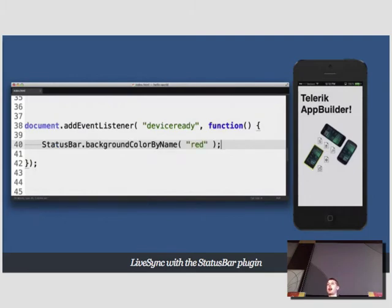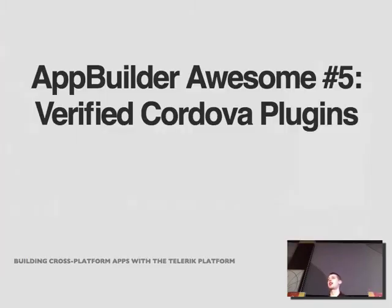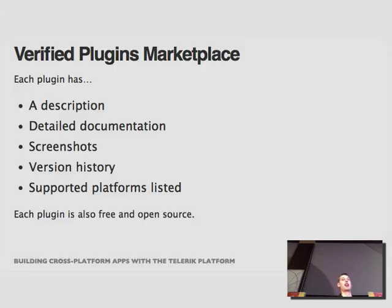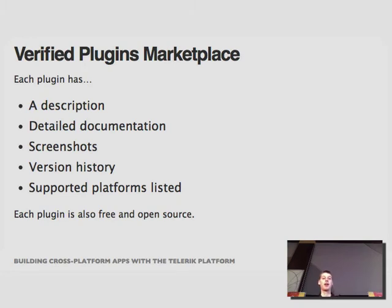To do something not covered by a core Cordova plugin, you have to write a Cordova plugin. There's an ecosystem at plugins.cordova.io, but at Telerik we wanted to enrich that environment with verified plugins that are well documented. We created a marketplace at plugins.telerik.com with about 35 plugins. For each plugin we have detailed documentation on how it works, screenshots, version history, and supported platforms listed. Each plugin is completely free and open source — not App Builder plugins, just Cordova plugins. You can use them with App Builder, or with any Cordova or PhoneGap project.